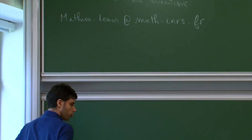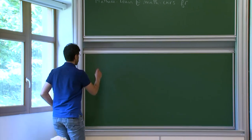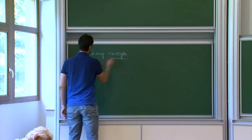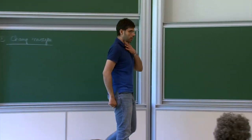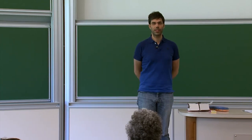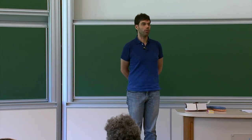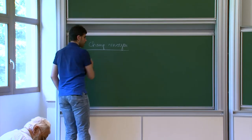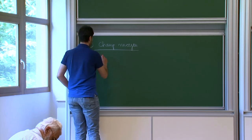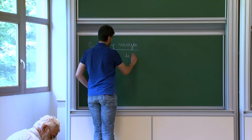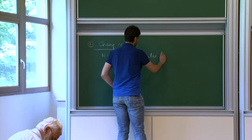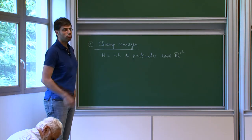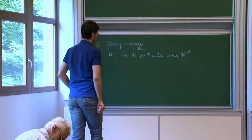So, I'm going to start this course by discussing the regime of the champ moyen. As not everyone is familiar with quantum mechanics, I'll start by talking about classical mechanics, but very quickly, just a few minutes. The question we want to ask: we look at a system that includes a large number of particles N in R^D. We are interested in D equals 1, 2, 3, but we can keep D general in most of the results.